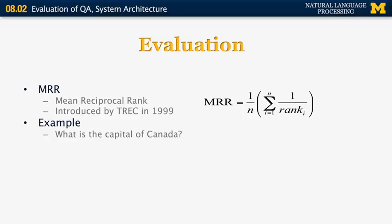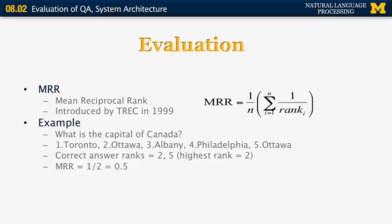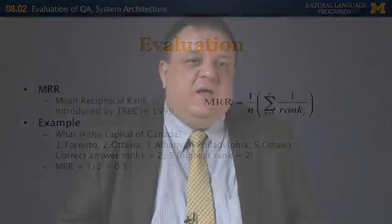Here's an example. Suppose the question is 'What is the capital of Canada?' and a system returns five ranked answers: Toronto, Ottawa, Albany, Philadelphia, Ottawa again. In MRR, you only look at the highest ranked correct answer — in this case, Ottawa in second place — giving a score of 1/2, or 0.5 points. You get no additional credit for Ottawa appearing again in fifth place. There is a different version called TRR, Total Reciprocal Rank, which gives extra credit for additional correct answers.